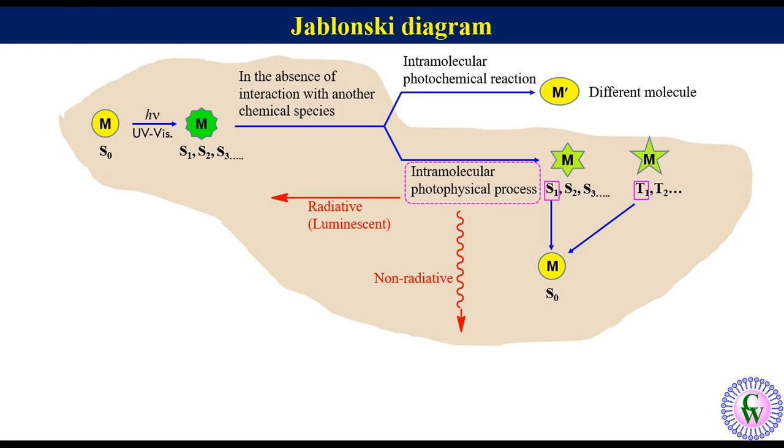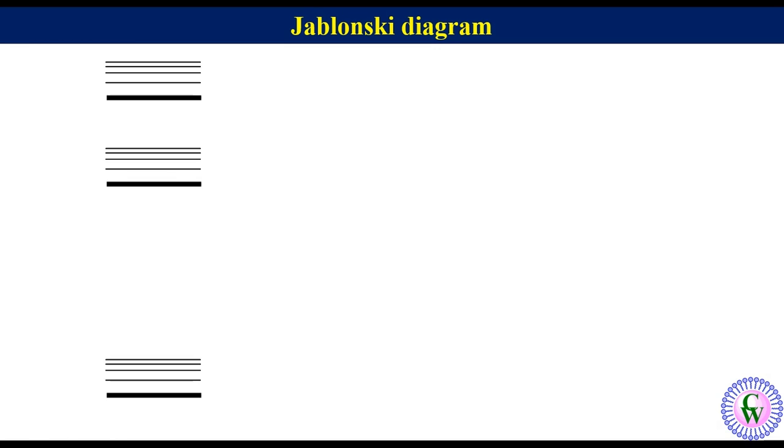These highlighted parts constitute Jablonski diagram. In a Jablonski diagram on the left hand side there are the singlet states of the molecules, namely the ground state S0 and excited singlet states S1, S2 etc. on a vertical scale of increasing energy.